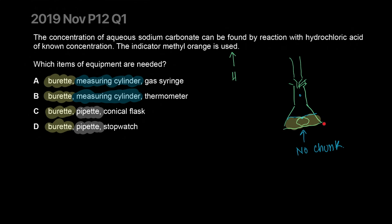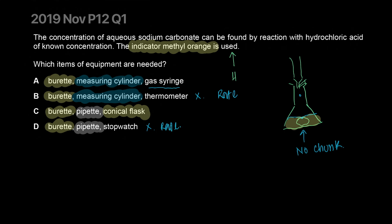Once all carbonate is consumed, the next drop of acid has nothing to react with, so the methyl orange changes color. You need a conical flask for this. Alternatively, you could use a gas syringe to collect the volume of carbon dioxide and calculate concentration that way. A thermometer is more for rate experiments, and so are stopwatches. But since the question specifies using an indicator, the only viable answer is C.